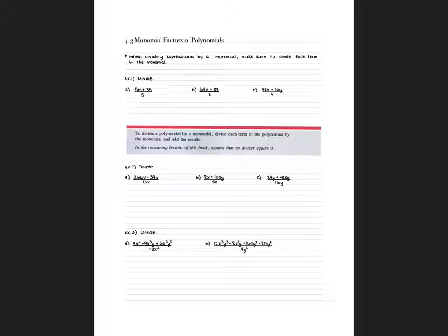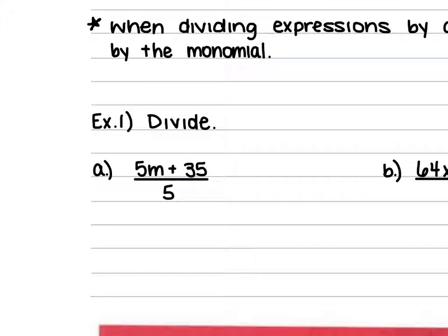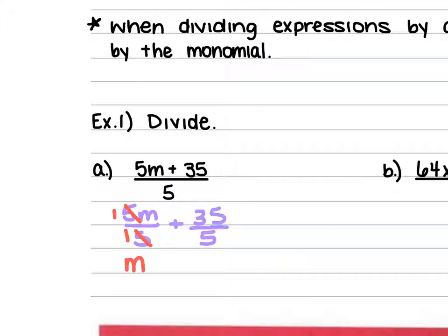We're going to start with Example 1a. We have 5m plus 35, all over 5. So we have to divide the 5m by 5 as well as the 35 by 5. We can rewrite this as 5m over 5, keeping addition, and then 35 over 5. The 5's simplify to 1, leaving m, and 35 over 5 is 7. So the answer is m plus 7.